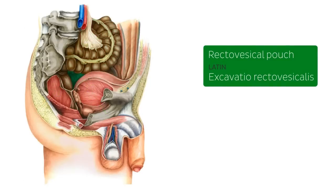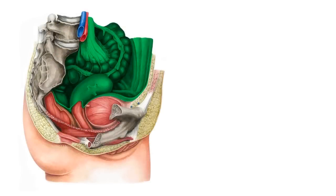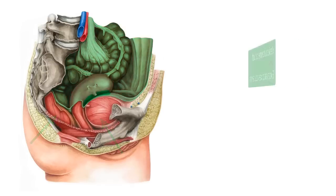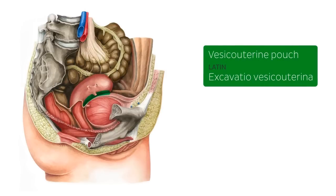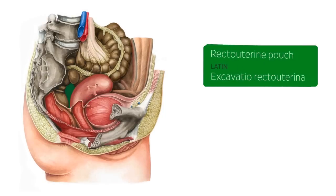However, in the female peritoneal cavity, the recto-vesical pouch does not exist since the uterus and vagina lie between the urinary bladder and the rectum. Instead, the peritoneum from the surface of the urinary bladder is reflected onto the anterior wall of the uterus, forming the narrow vesico-uterine pouch, and continues along the posterior wall of the uterus where it reflects onto the anterior wall of the rectum, thereby forming a recess called the recto-uterine pouch.